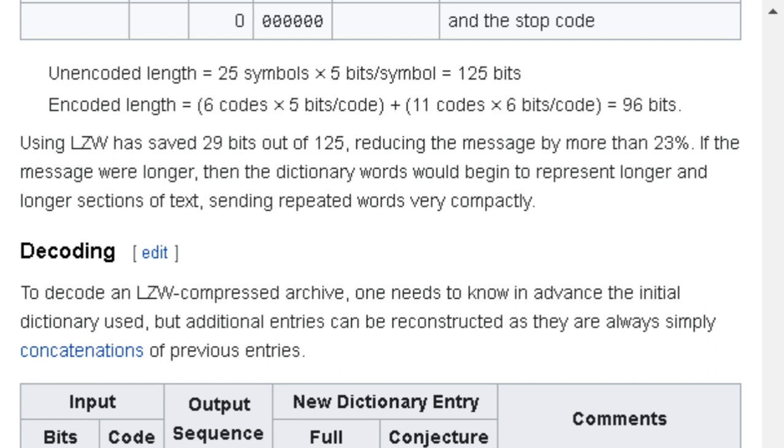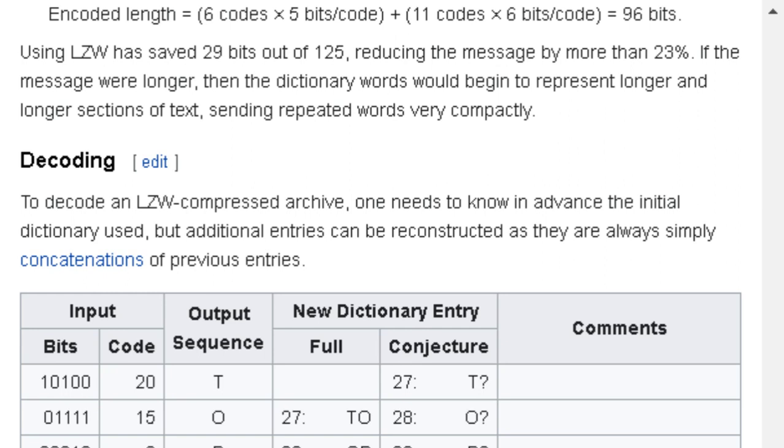17th entry: current sequence OT, next character pound, output code 34, bits 100010. Comments: pound stops the algorithm, sends the current sequence. 18th record: current sequence nothing, next character nothing, output code 0, bits all zeros. Comment: and the stop code. Unencoded length equals 25 symbols times 5 bits per symbol equals 125 bits. Encoded length equals 6 codes times 5 bits per code plus 11 codes times 6 bits per code equals 96 bits. Using LZW has saved 29 bits out of 125, reducing the message by more than 23%. If the message were longer, then the dictionary words would begin to represent longer sections of text, sending repeated words very compactly.